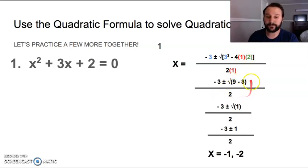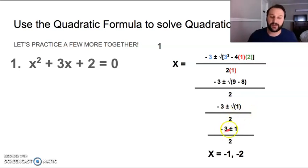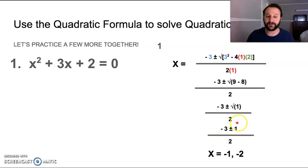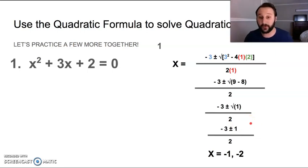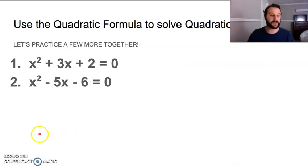So now what we need to do is simplify. We do negative three plus or minus the square root of three times three — three squared is positive nine. Then negative four times one is negative four, and negative four times two is negative eight. So we've got the square root of nine minus eight, and two times one is two. Moving forward, we've got negative three plus or minus the square root of one — and the square root of one is one. So we bump that down and we've got these two possible answers: negative three plus one is negative two over two, which is negative one. And negative three minus one is negative four over two, which is negative two.